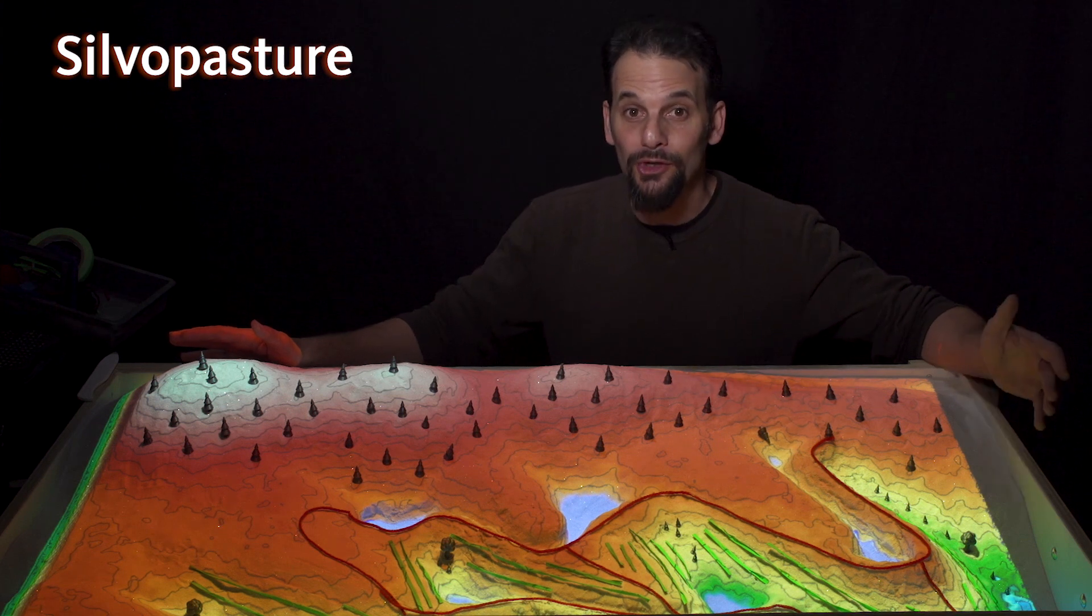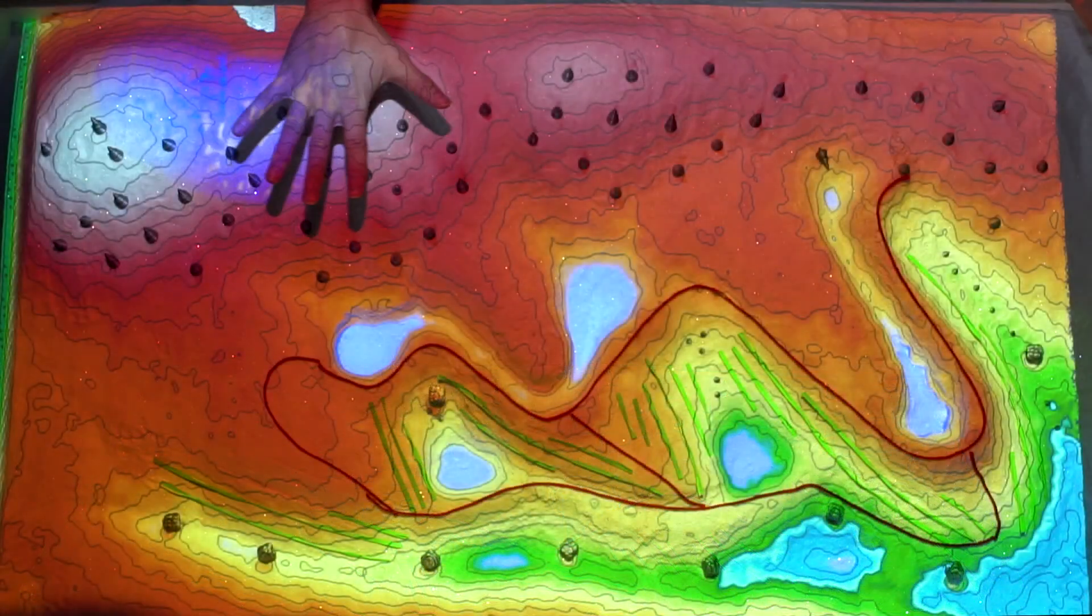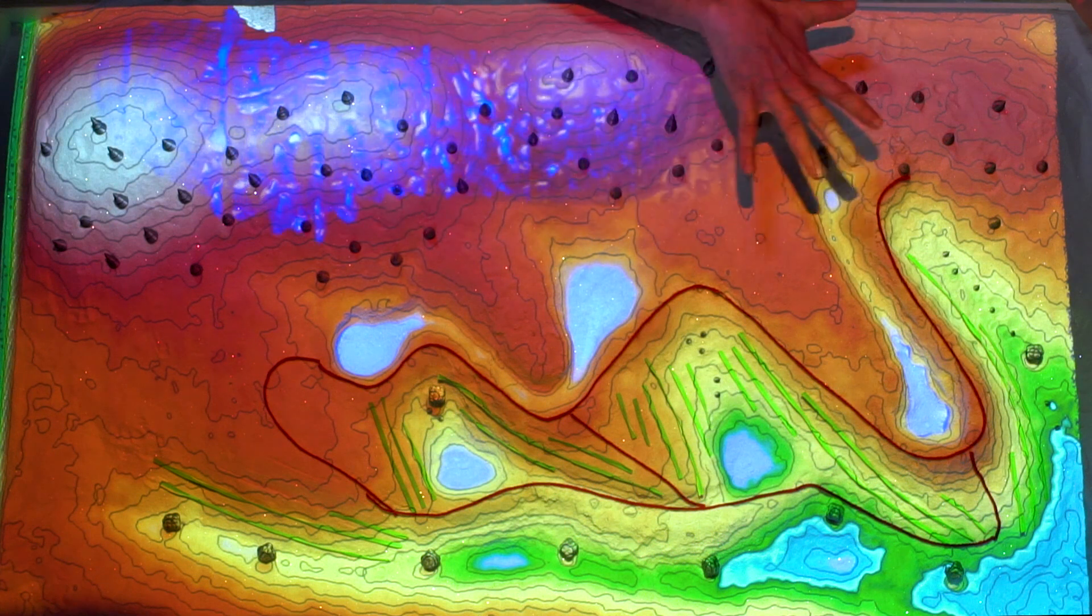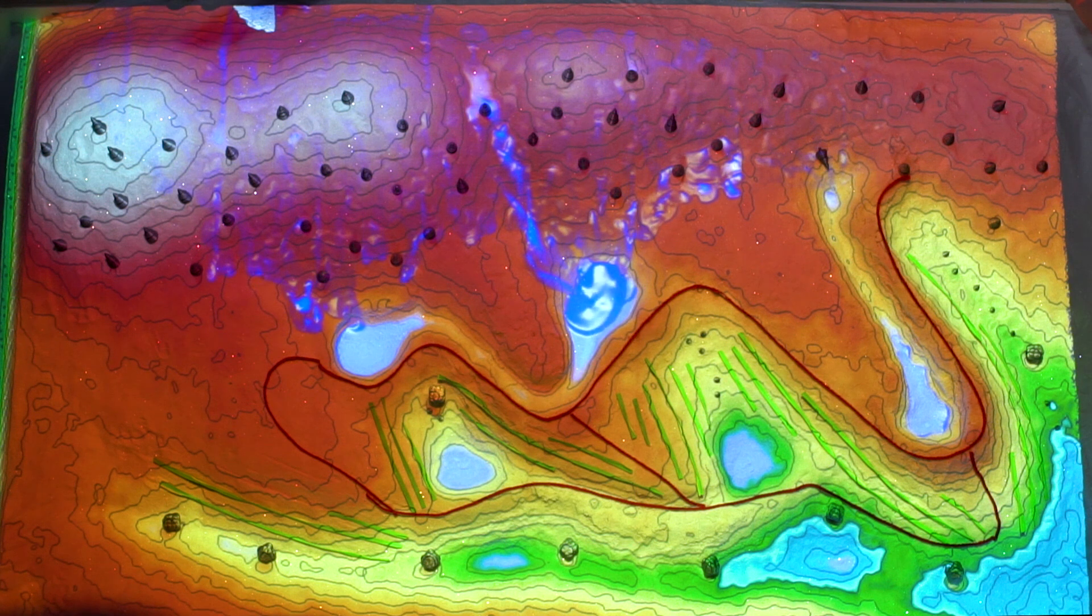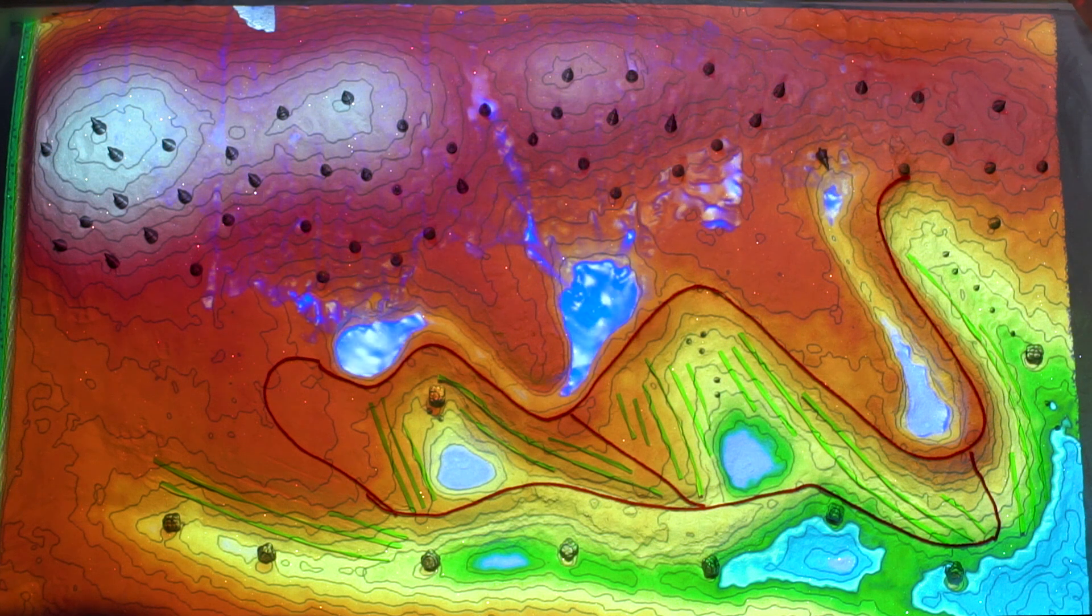Previously, when we were looking at the water layer, we put forest and savanna up here in the water catchment zone. The reasons for that are that these are steeper slopes in the upper catchments where we want to soak in the water.